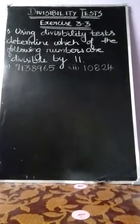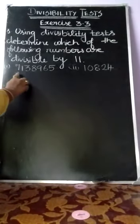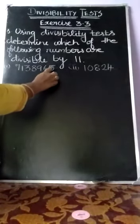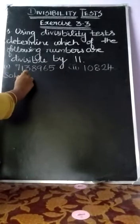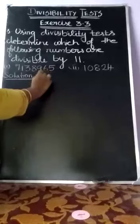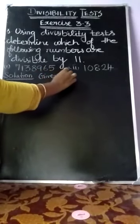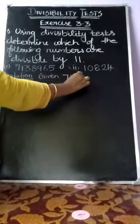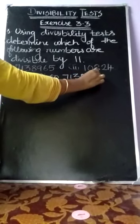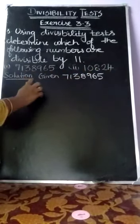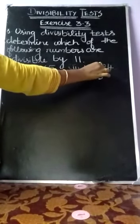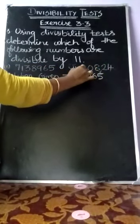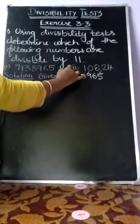First subdivision: the value is 7138965. We are going to check if the given value is divisible by 11 or not. We have to add the sum of the digits at odd places — odd place means 1st place, 3rd place, 5th place, and 7th place.